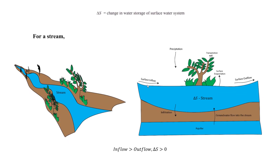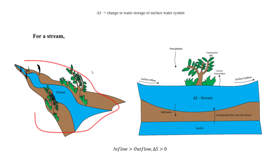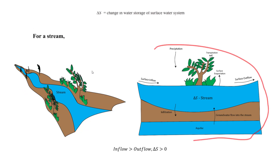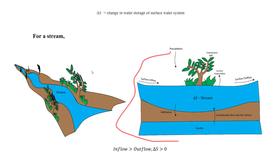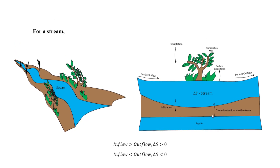Let's look specifically at a stream as our reservoir to analyze for storage. Looking at a side view of this stream, we can see it has a change in storage depending on the inflows and outflows. For example, precipitation is an inflow and surface evaporation is an outflow.